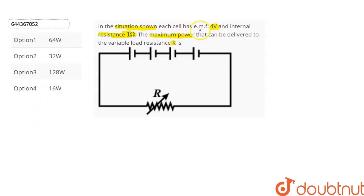It is given that the EMF of each cell is 4 volts, so the total EMF E will be equal to E₁ + E₂ + E₃ + E₄, where E₁ is the EMF of this cell, E₂ is the EMF of this cell, E₃ is the EMF of this cell, and E₄ is the EMF of this cell. As E₁ = E₂ = E₃ = E₄, so E comes out to be 4 × 4 which is 16 volts.